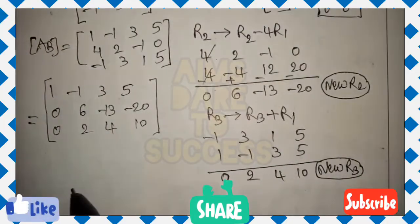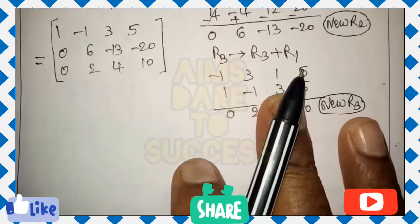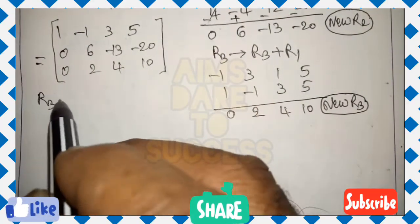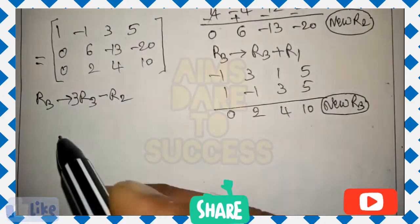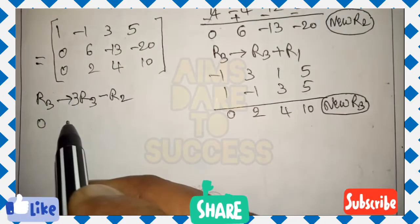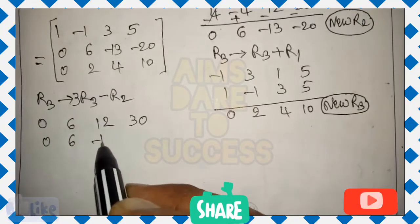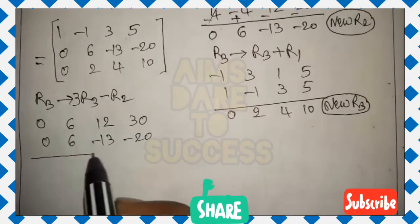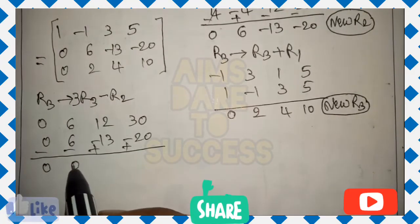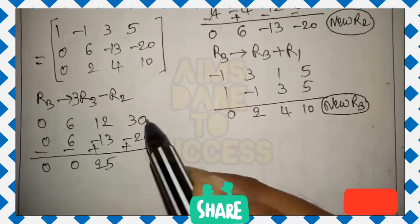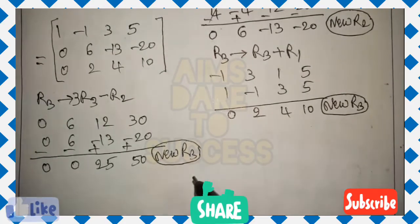Apply R3 = 3×R3 minus R2, because 2×3 = 6 matches the leading element of R2. Computing 3×R3: 0, 6, 12, 30. Subtracting R2 (0, 6, minus 13, minus 20): 0 minus 0 = 0; 6 minus 6 = 0; 12 minus (minus 13) = 12 + 13 = 25; 30 minus (minus 20) = 30 + 20 = 50. New R3: 0, 0, 25, 50.